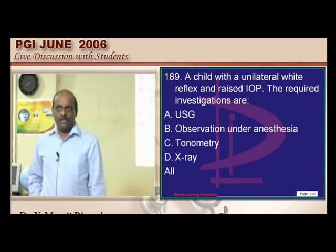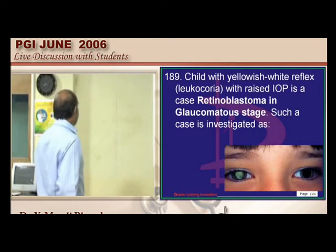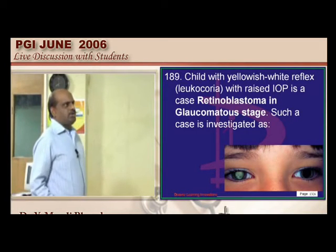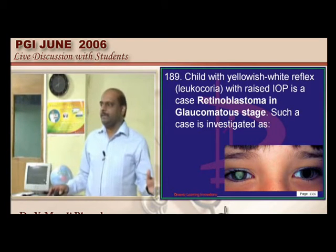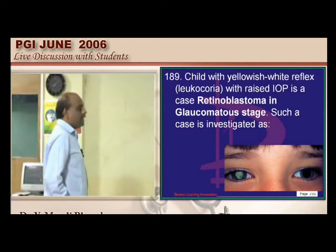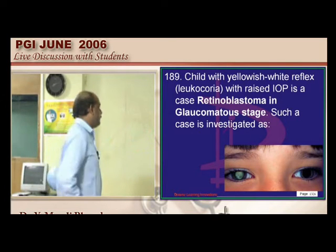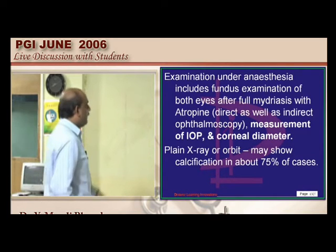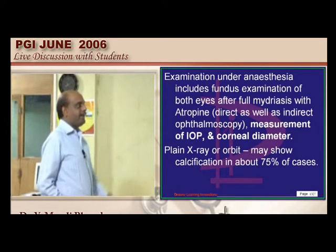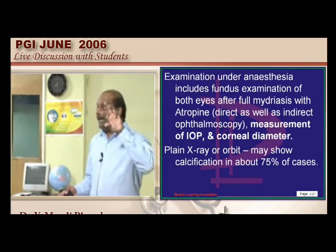Unilateral white reflex is called leukocoria. If the same patient also has a rise in intraocular pressure, the important investigation to use — since retinoblastoma is the most common cause for leukocoria — is relevant because it can cause glaucomatous evolution where raised IOP is found. You have to examine the fundus, measure the IOP, corneal diameter, and calcification can be detected by plain X-ray.